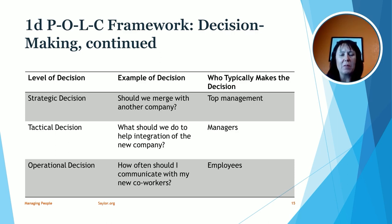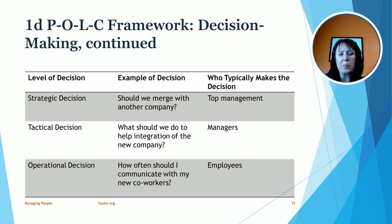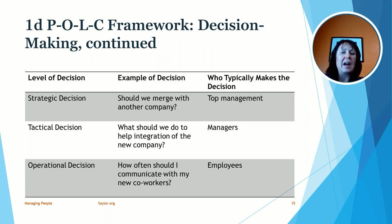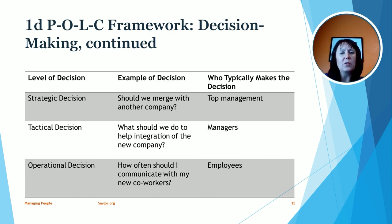Another thing we can look at with decision-making is the level of decision. There are three main levels: strategic decisions, tactical decisions, and operational decisions. Strategic decisions are usually made by top management such as CEOs. Tactical decisions, focused on how we're going to accomplish something, are usually made by managers. Operational decisions are focused on employees — how they organize their work and how they should communicate.